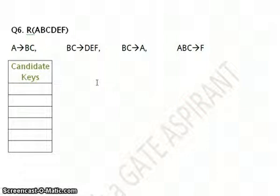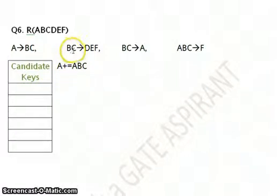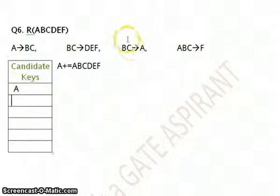This is our last question. Make sure you try to understand this. I do the same approach and go with A's closure. A itself, then from A I can get B and C, and from B, C I can get D, E, F. So I have A, B, C, D, E, F — A is my candidate key. Now taking the faster approach, I search for A on the RHS. I find it here, so I replace A by B, C. That gives me candidate key BC.